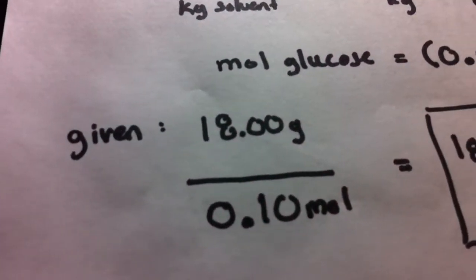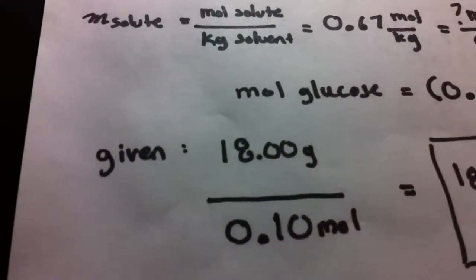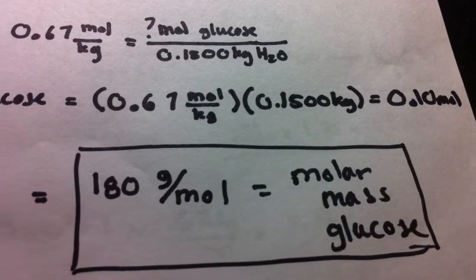Now we know the moles of glucose and we were given the grams of glucose used. So we can put the grams over the moles, and that's going to equal out to our molar mass, 180.